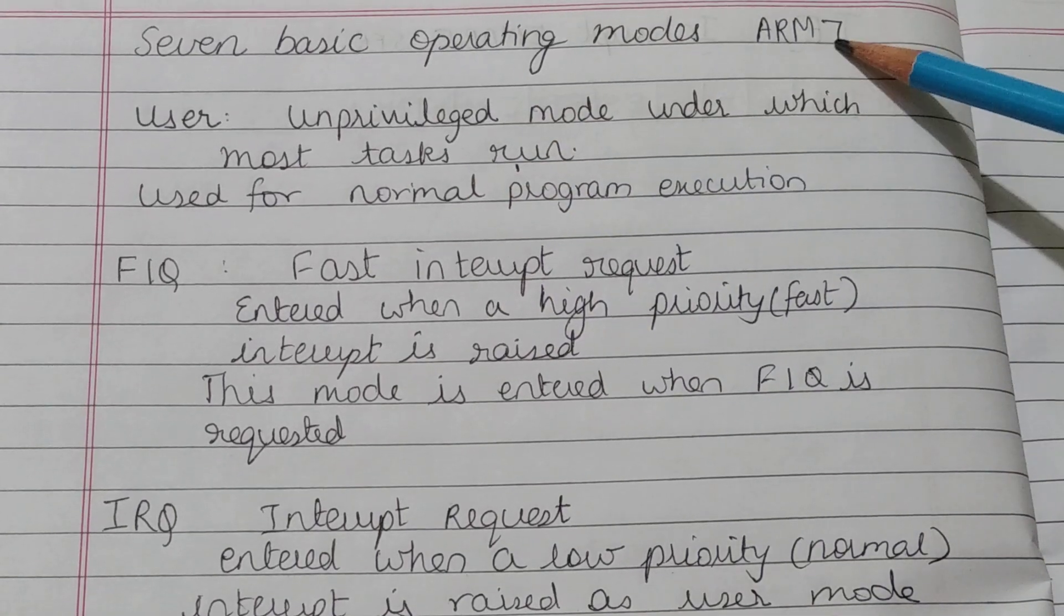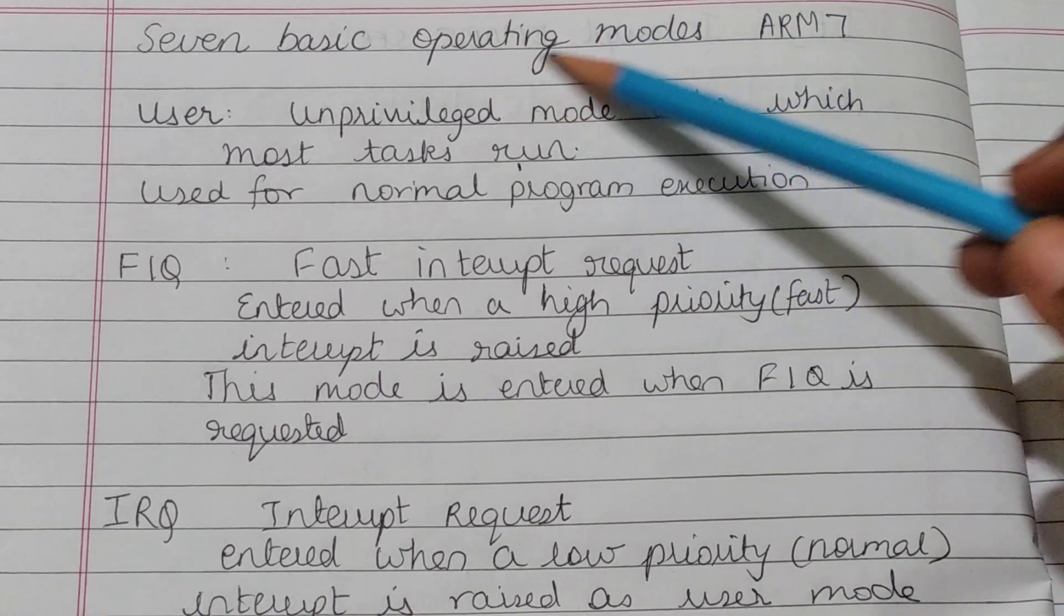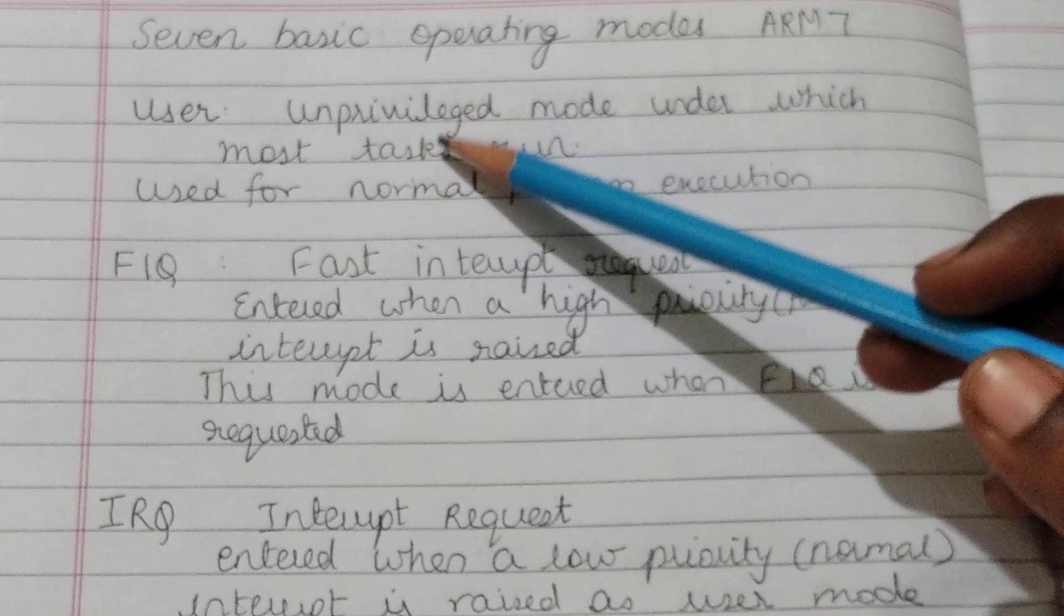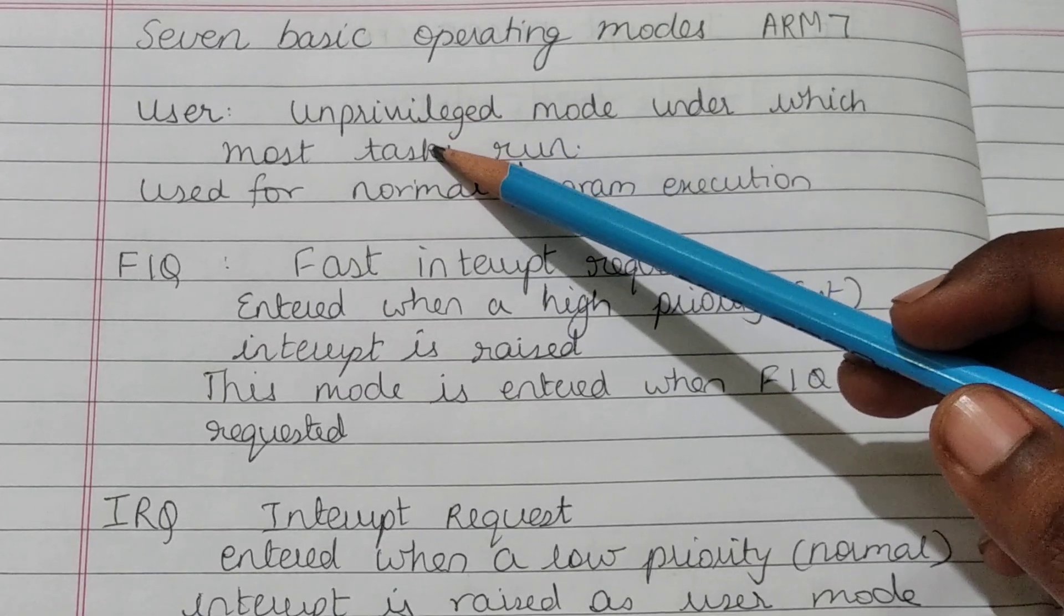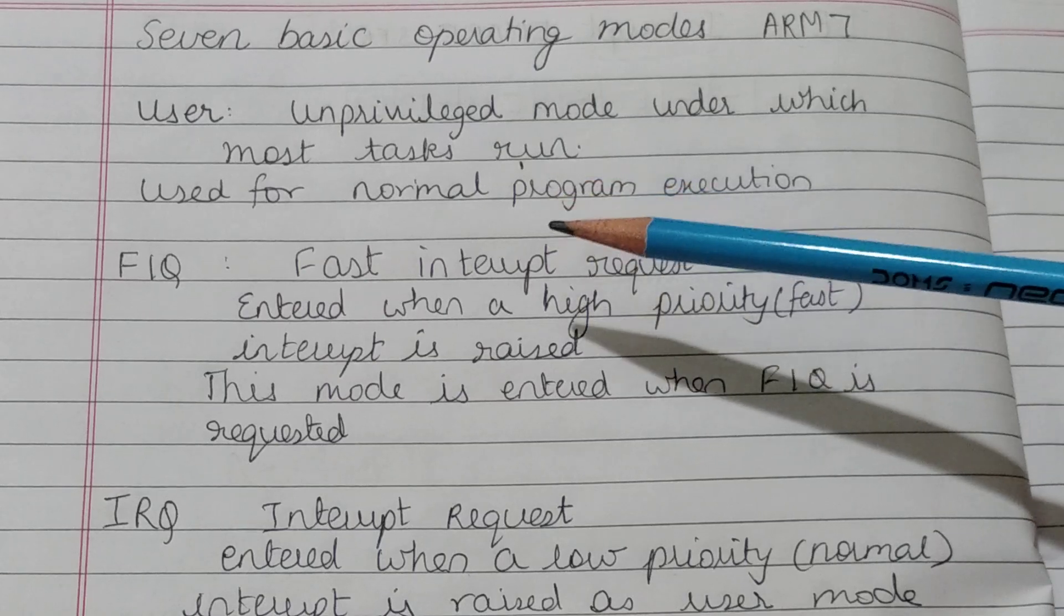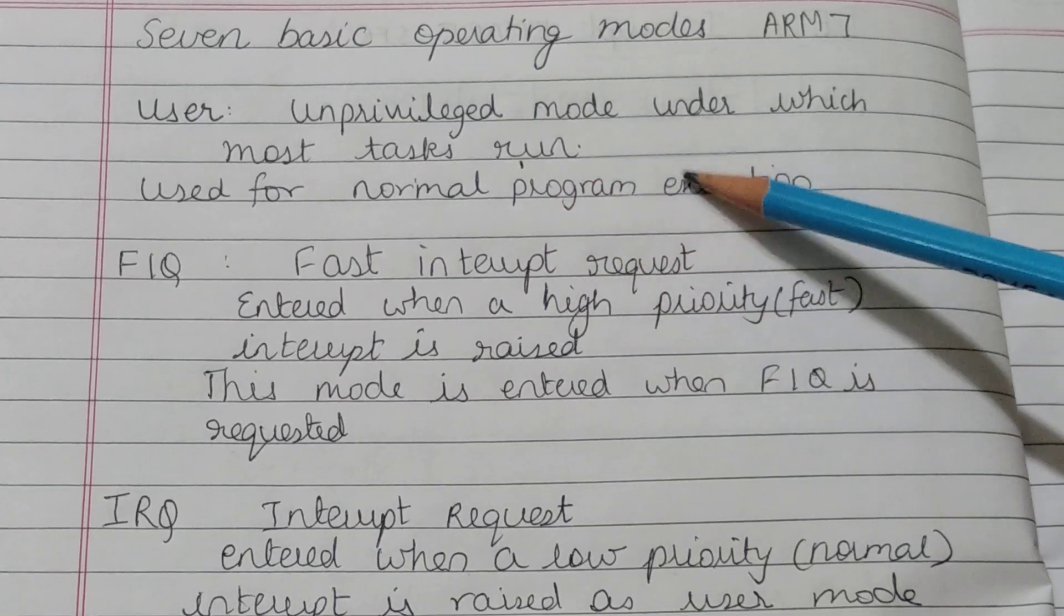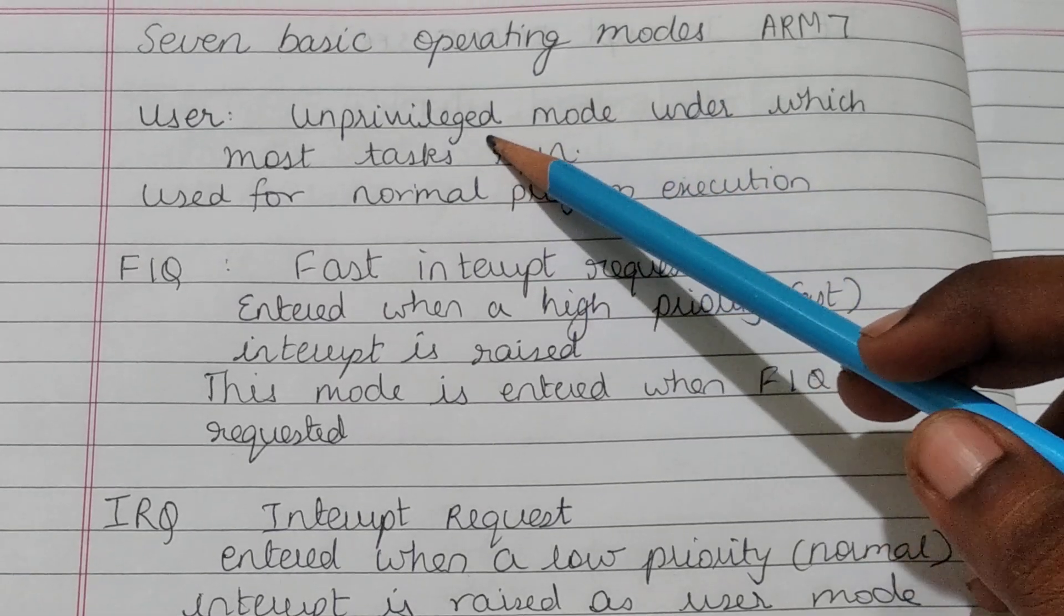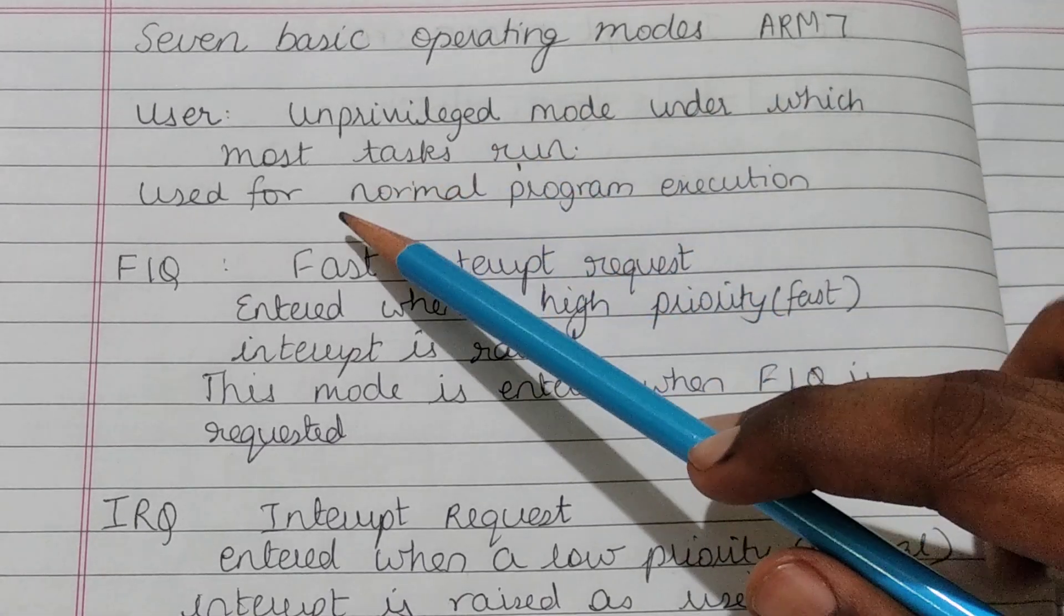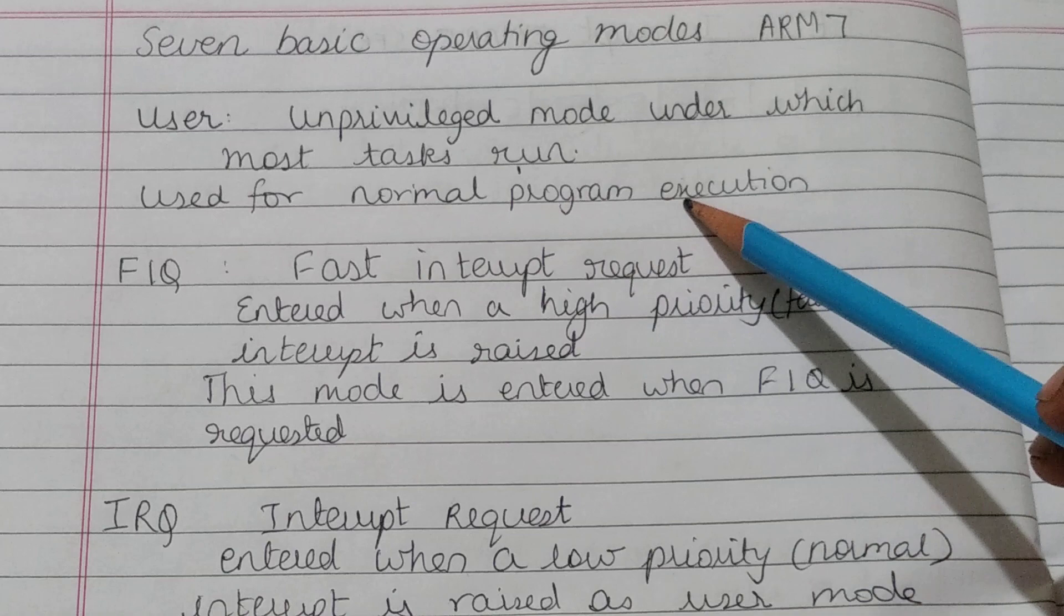Operating Modes of ARM7 Processor. The seven basic operating modes are: User mode - this mode is used for normal program execution. It is unprivileged mode of ARM7 under which most tasks run, used for normal program execution.